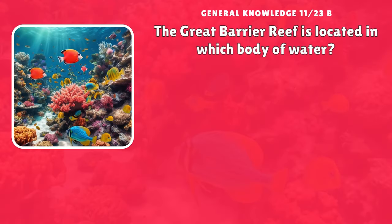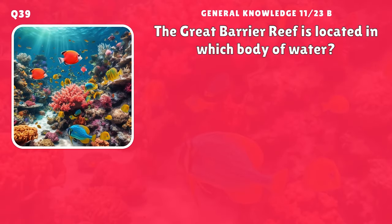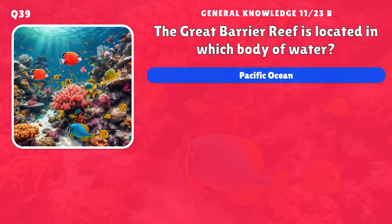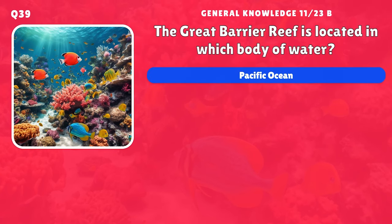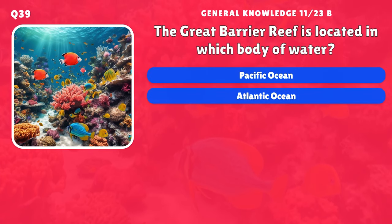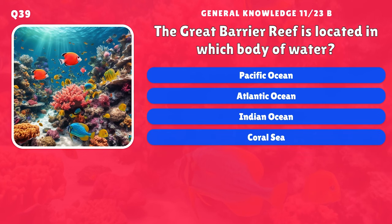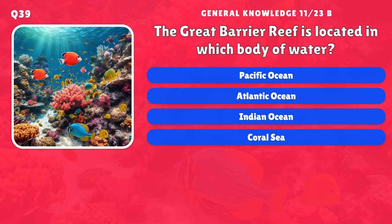The Great Barrier Reef is located in which body of water? A) Pacific Ocean, B) Atlantic Ocean, C) Indian Ocean, D) Coral Sea.